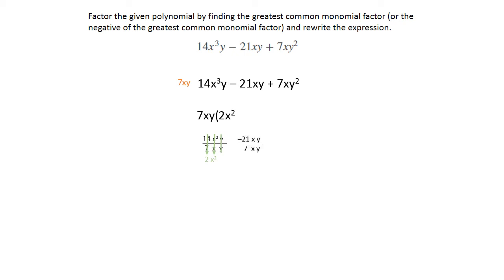In the second term, we are dividing the negative 21 by the 7 to get negative 3. The x's and the y's cancel out, so our second term becomes minus 3.